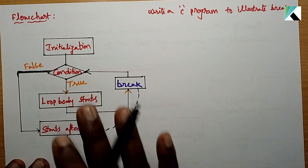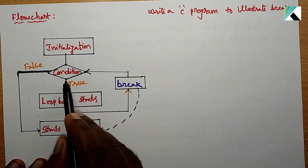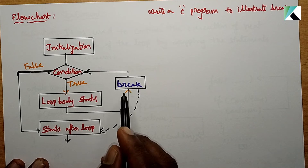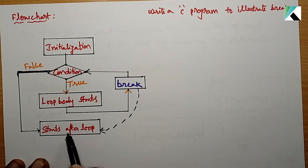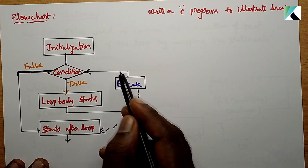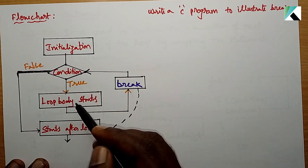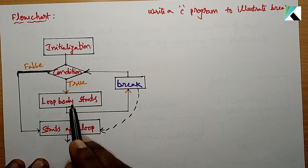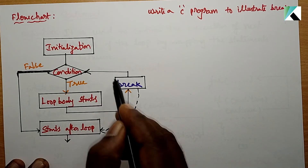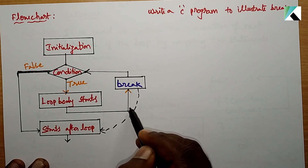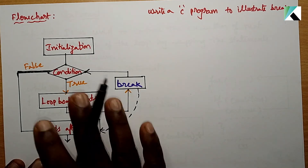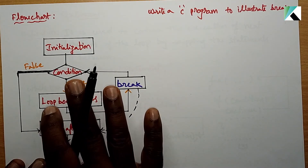Now let's check the flowchart. Through the condition check, the loop body statements are executed. When the loop body statements finish, the loop repeats. Initialization, loop variable initialization, condition checking — while condition is true, loop body executes. When a break statement is encountered, the program exits out of the loop and executes statements after the loop.